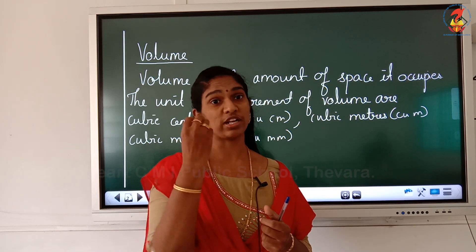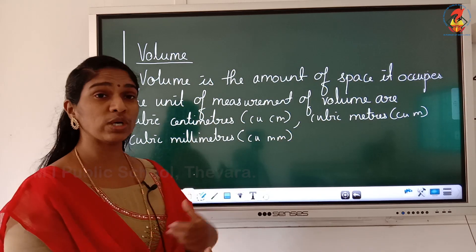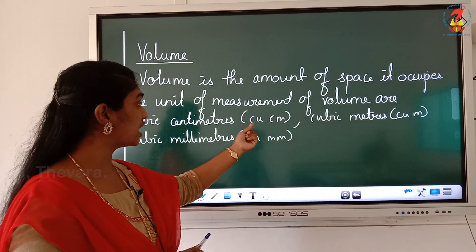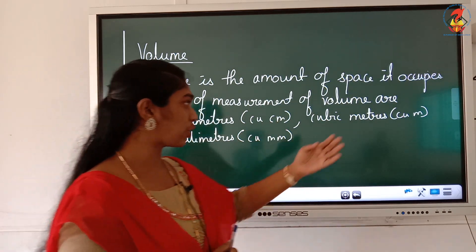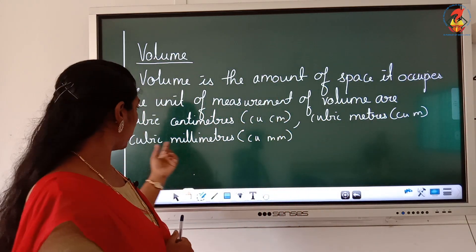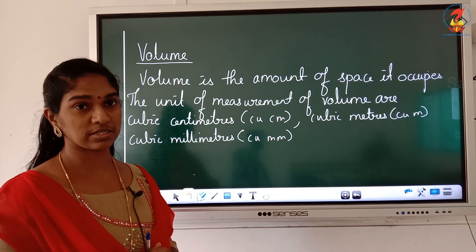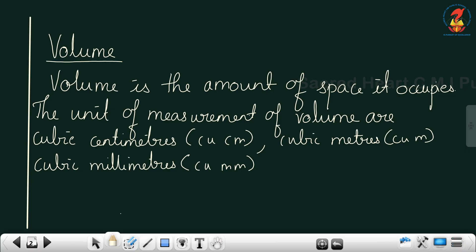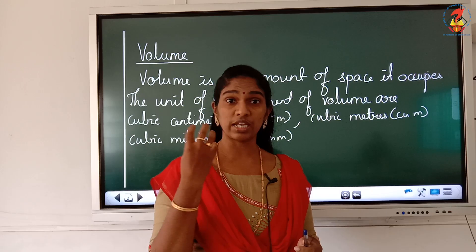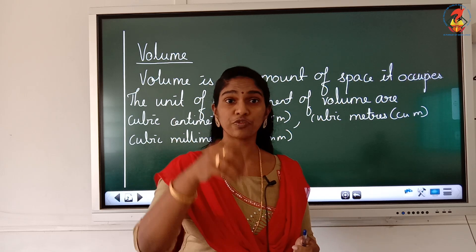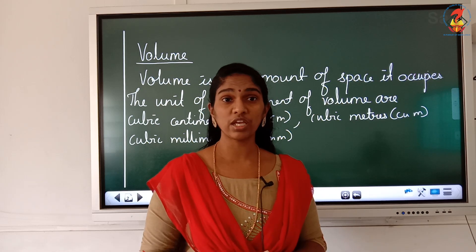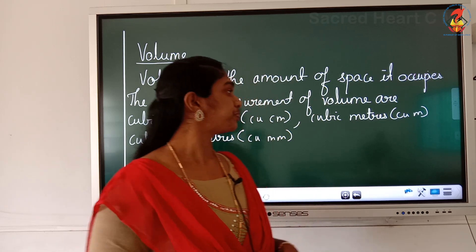Now, how do we write the units of volume? If a question is given in centimeters, the unit is written as cubic centimeter (cu cm). If the question is in meters, you write cubic meter. If it is in millimeters, you write cubic millimeters. Remember that for area we wrote square meter or square centimeter — for volume it will be cubic meter or cubic centimeter. Volume is the amount of space an object occupies.